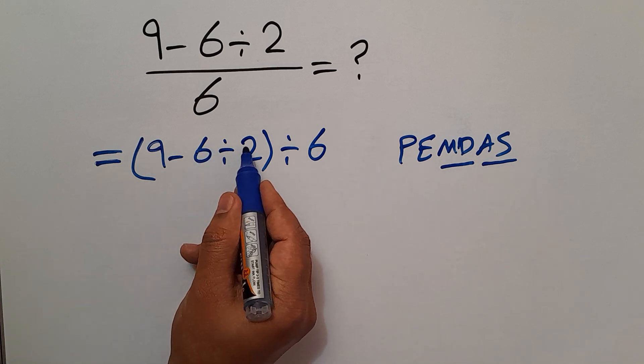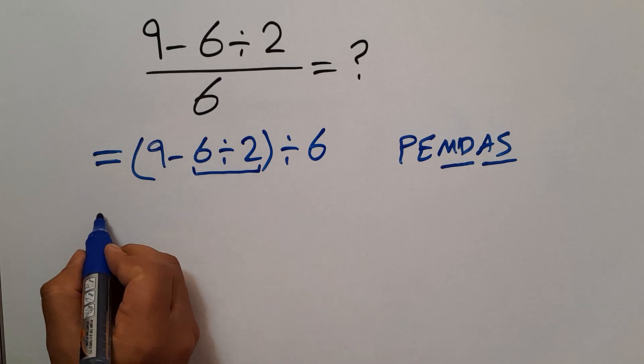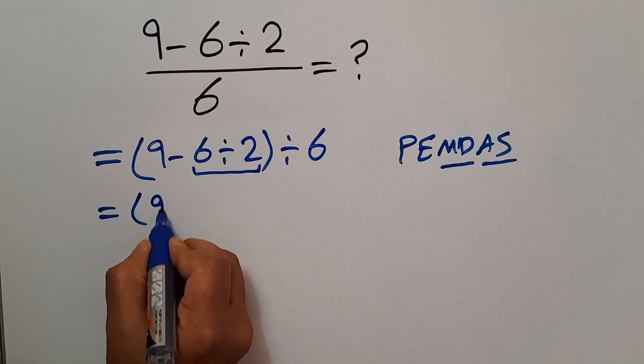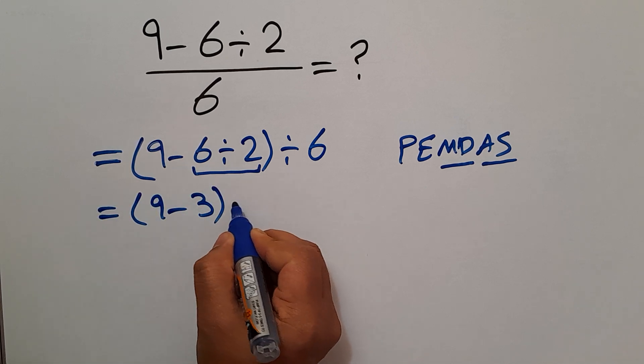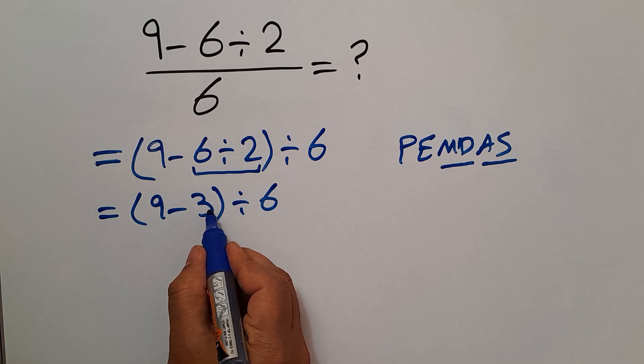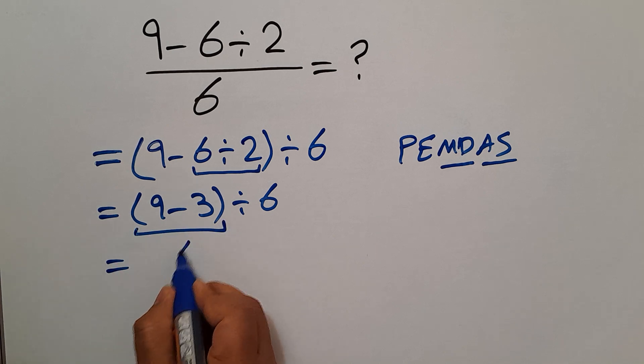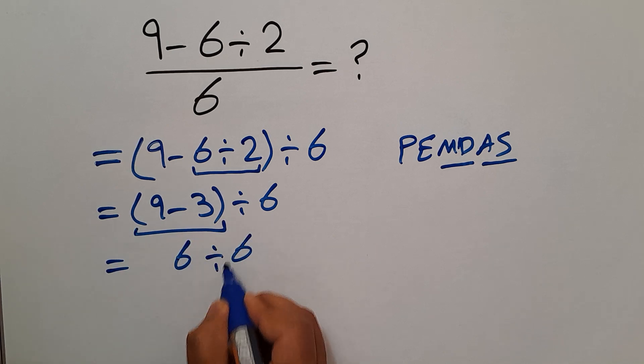So first, 6 divided by 2 which equals 3. So we have parentheses 9 minus 3 divided by 6. 9 minus 3 equals just 6. So we have 6 divided by 6.